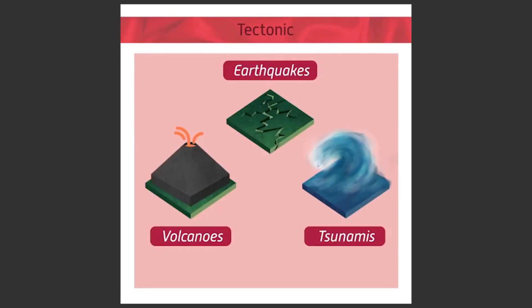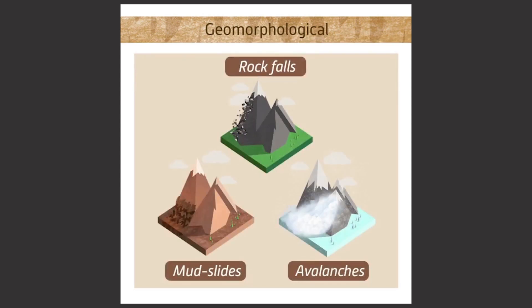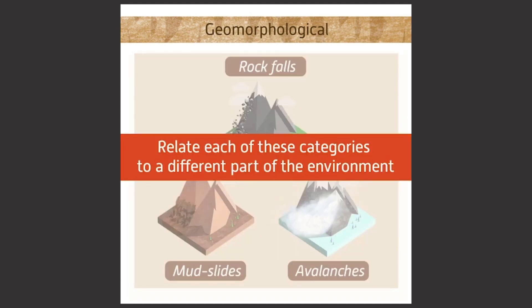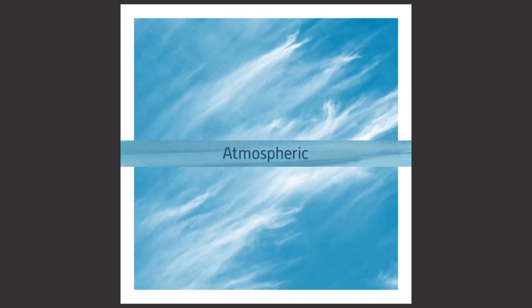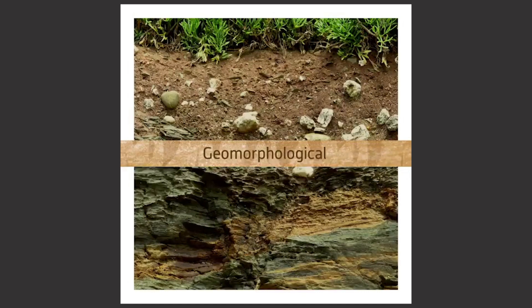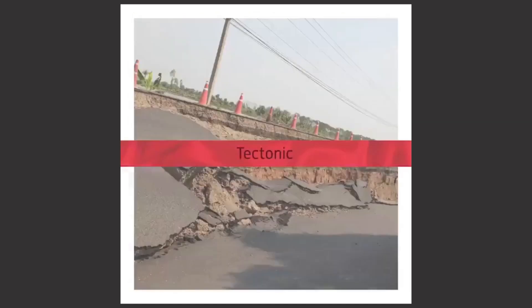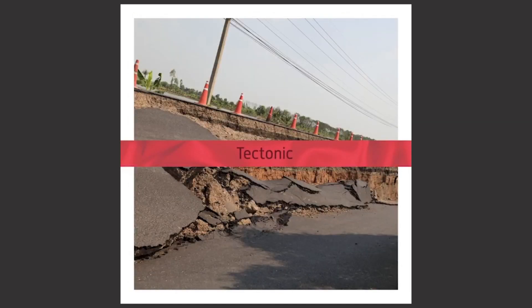Tectonic hazards include volcanoes, earthquakes, and tsunamis. The final group, geomorphological hazards, includes events that happen on the ground, such as rock falls, mudslides, and avalanches. It may help to relate each category to a different part of the environment: atmospheric hazards relate to the sky, geomorphological hazards relate to the ground, and tectonic hazards relate to plates moving underground.